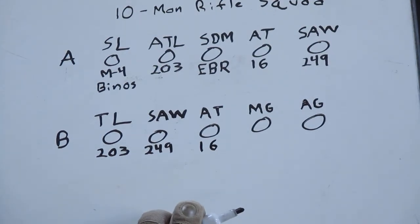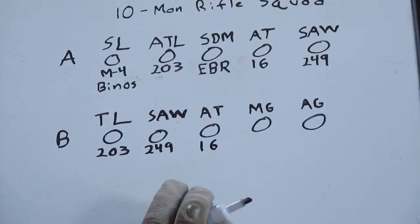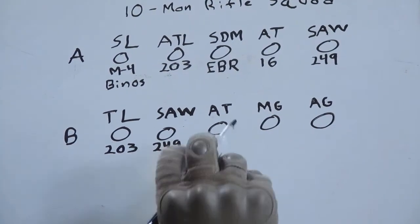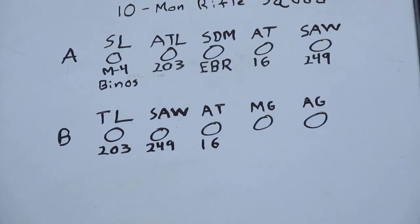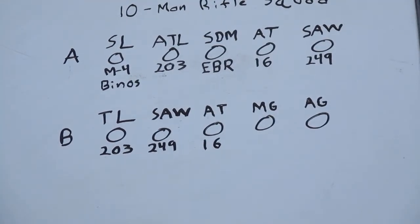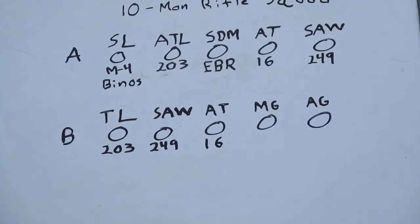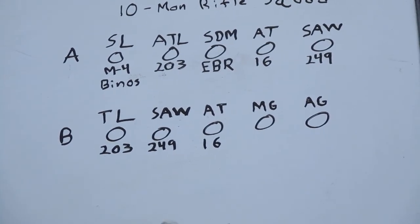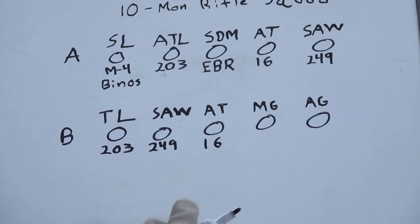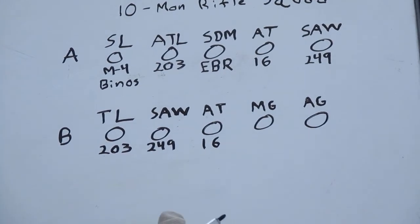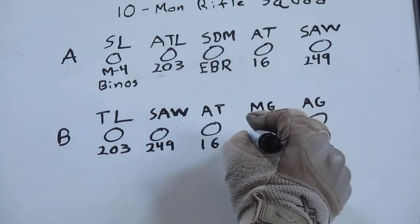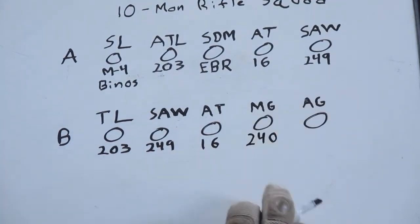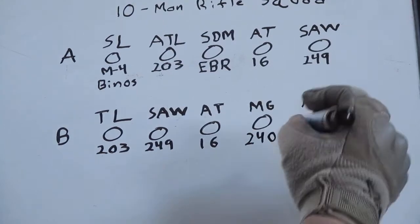They should get a folding stock type weapon preferably. It'll just be easier for them. Your machine gunner will carry whatever he gets off the battlefield. It could be an M-240, an FN Mag-58, or a Russian PKM, or some other belt-fed machine gun.